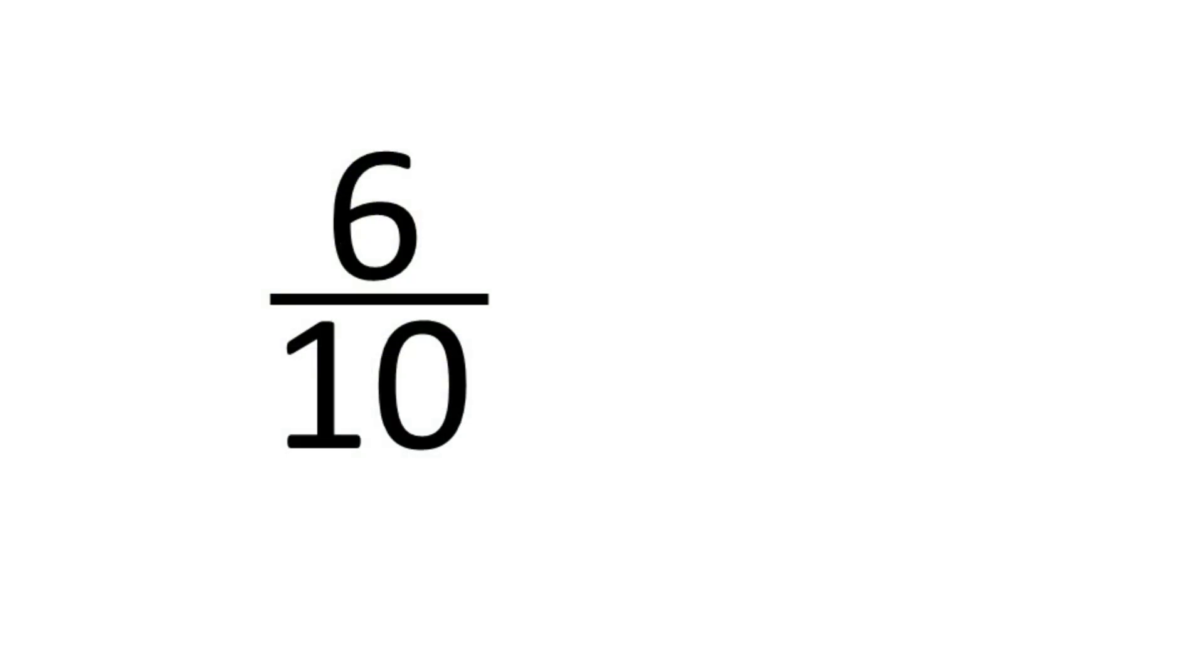Here is 6 tenths. This fraction can be simplified because both the numerator and the denominator can be divided by the same number, in this case 2. 6 divided by 2 is 3, and 10 divided by 2 is 5, 3 fifths.